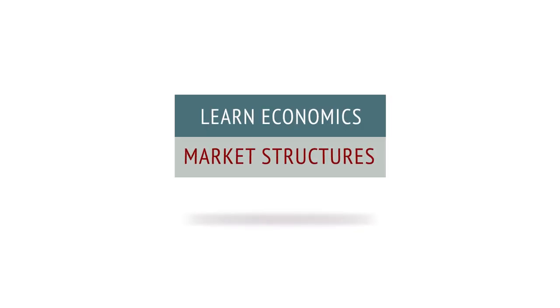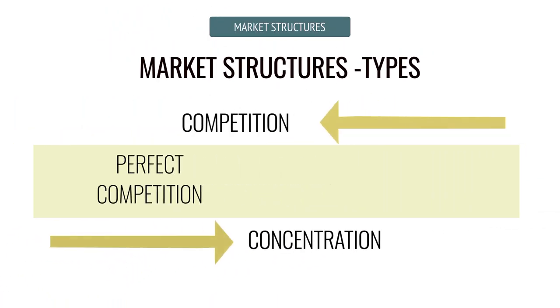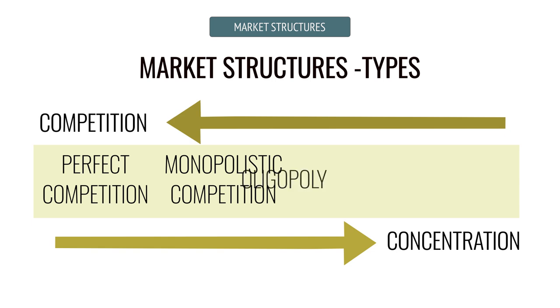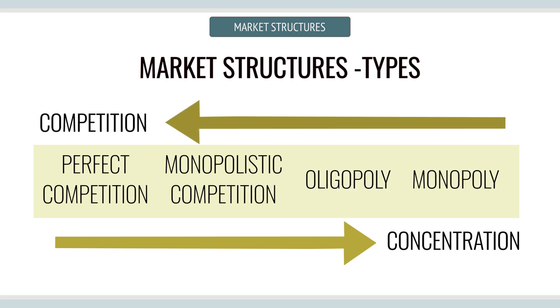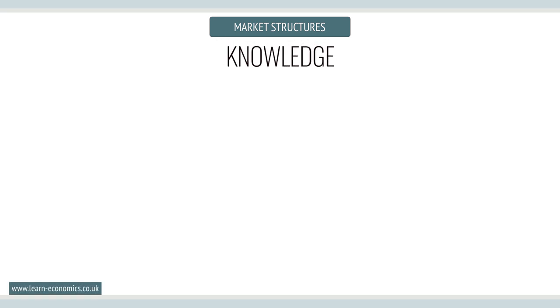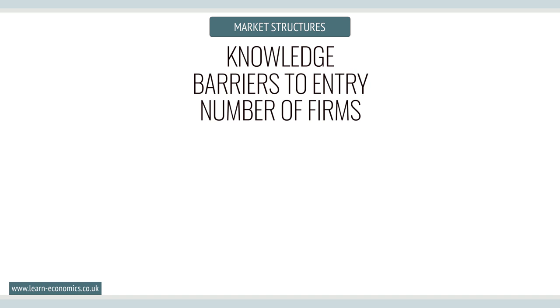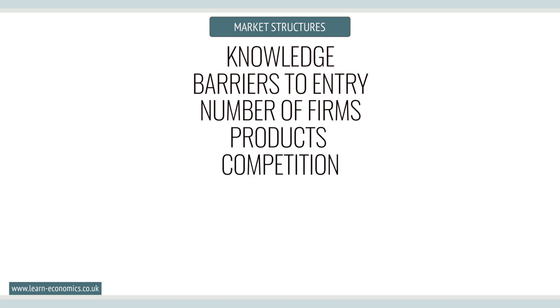Market Structures. Economists identify several market structures including perfect competition, monopolistic competition, duopoly, oligopoly, and monopoly. We can identify the key differences in each market form which revolve around knowledge, barriers to entry, number of firms, product differentiation, level of competition, price, and level of profits.